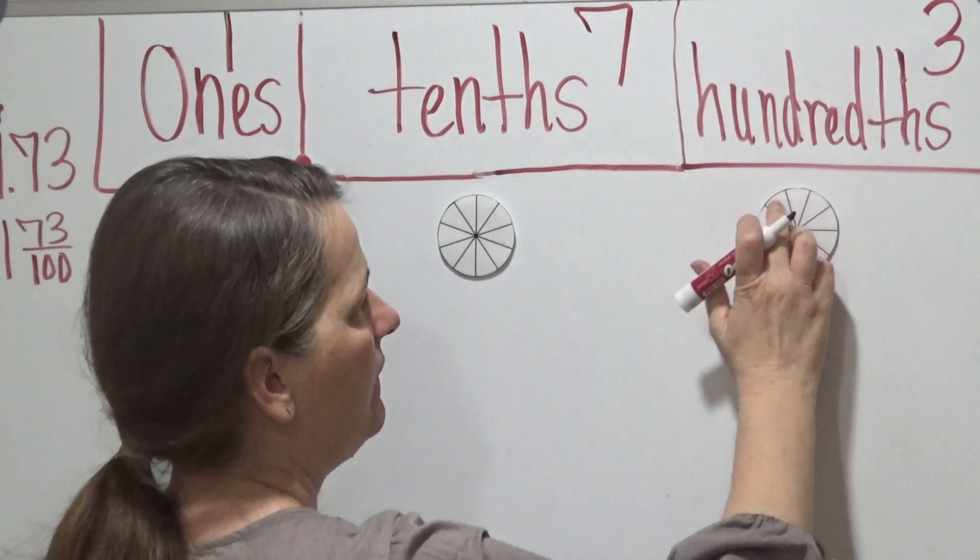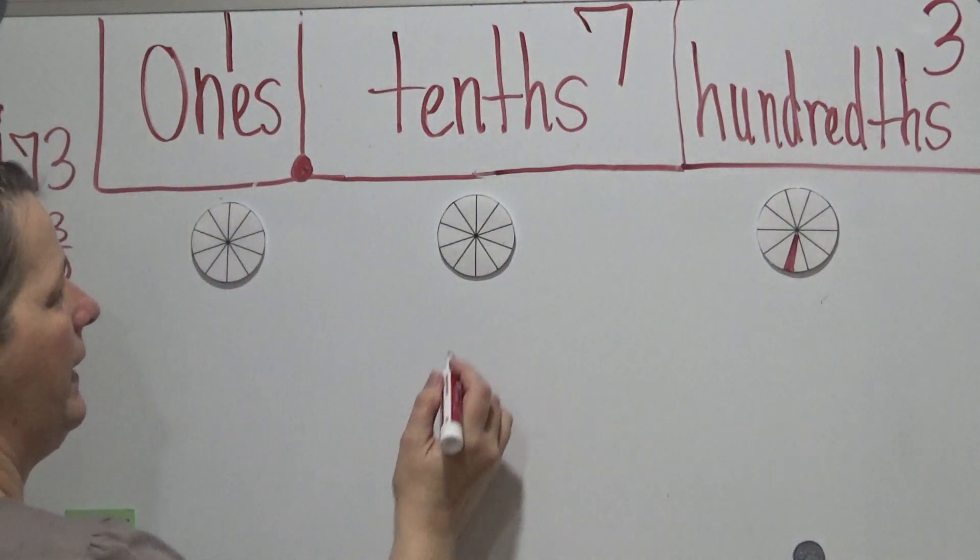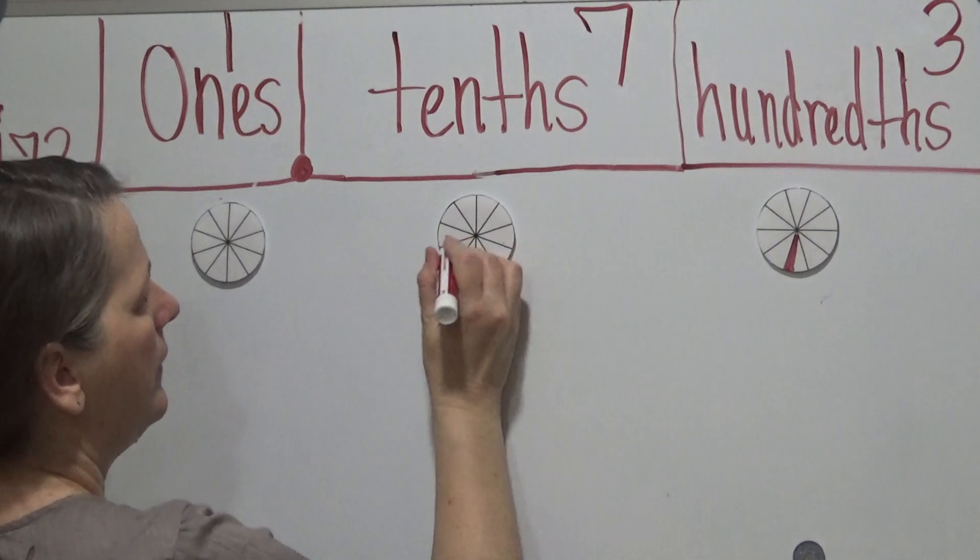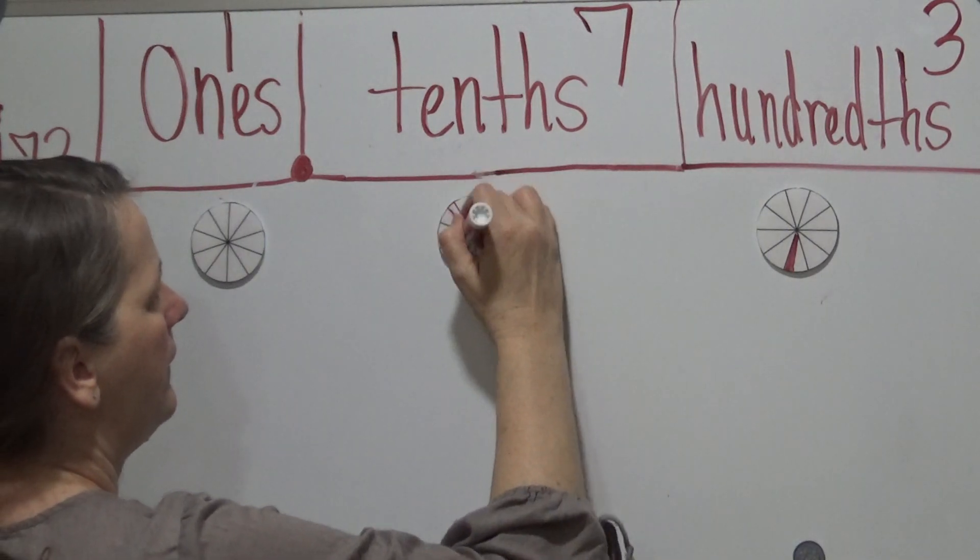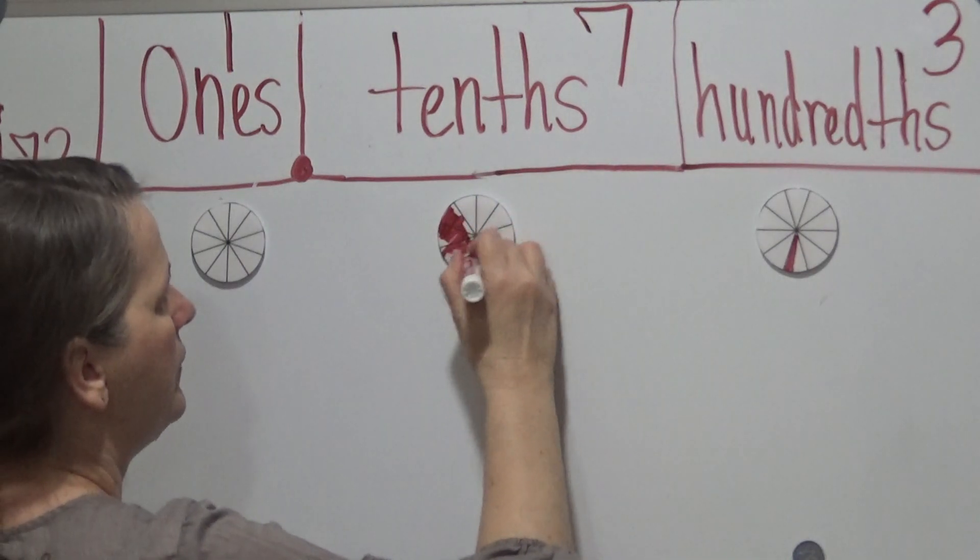So 1, 2, 3. So there would be 10 in each one. 10, 20, 30, 40, 50, 60, 70, 80, 90, 100. So 3 would be shaded in on that. On this part, we would have 7 that's shaded in. I'm going to go ahead and shade all this in so you can visually see it.